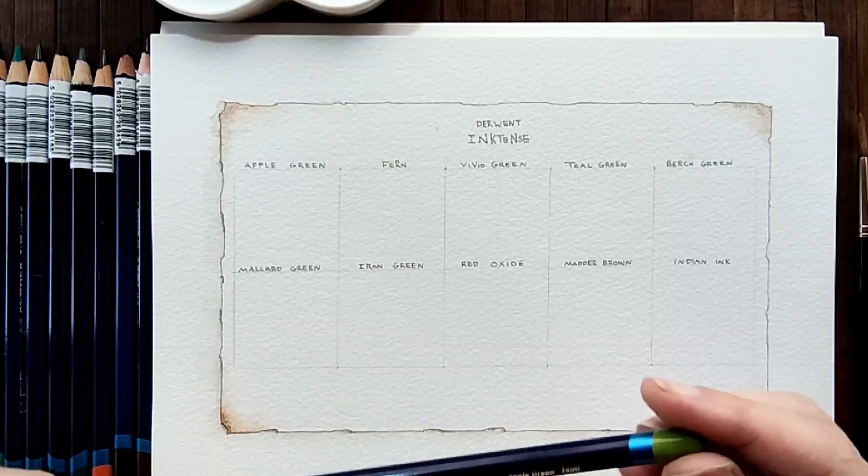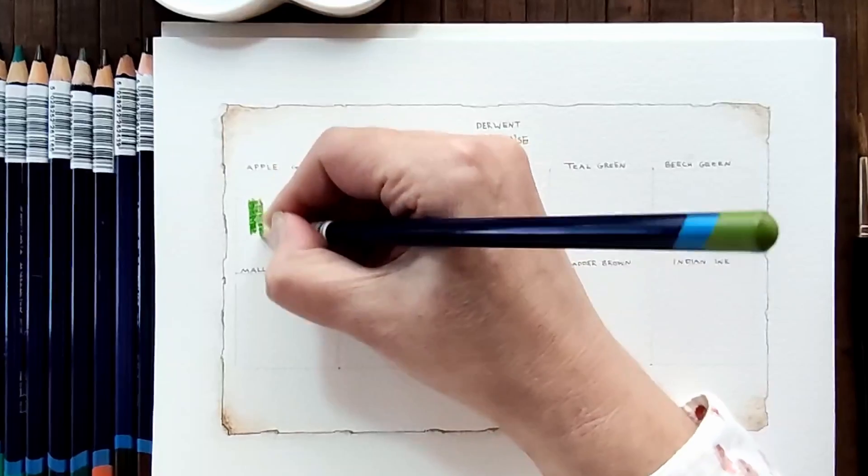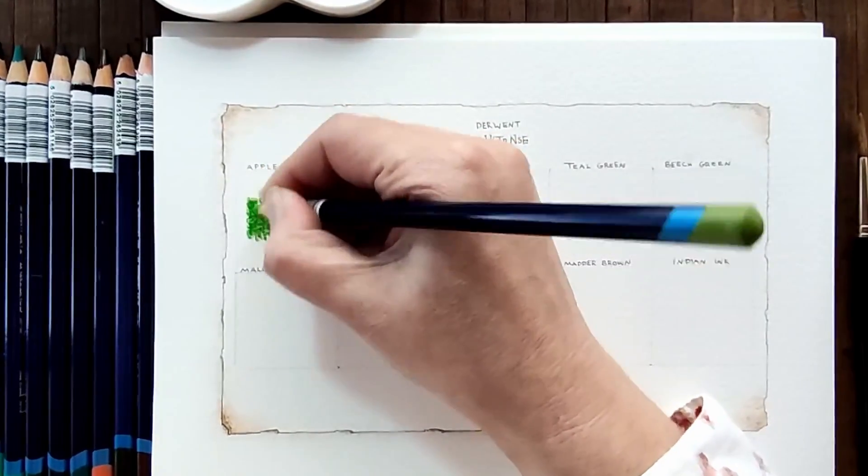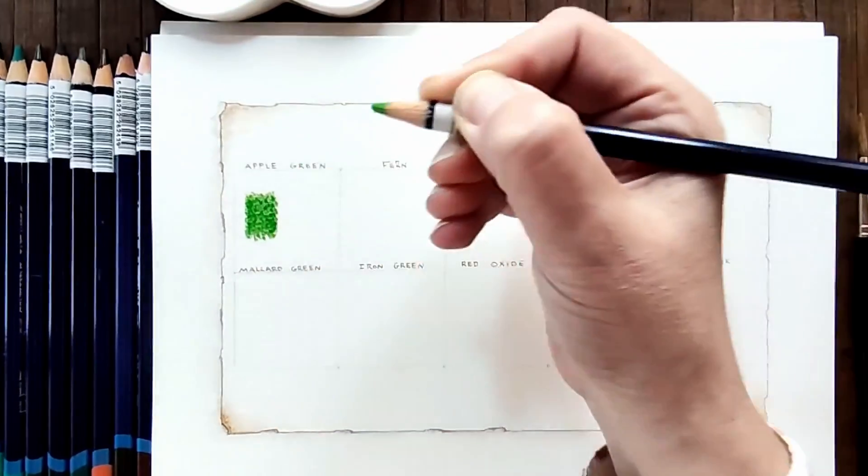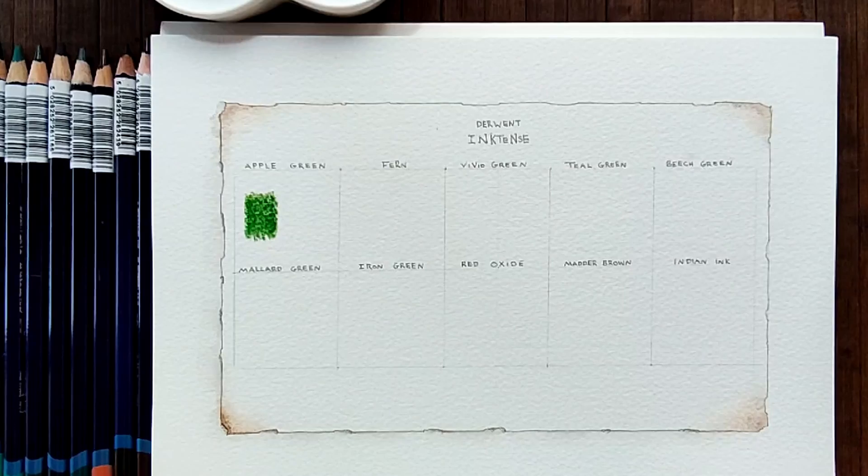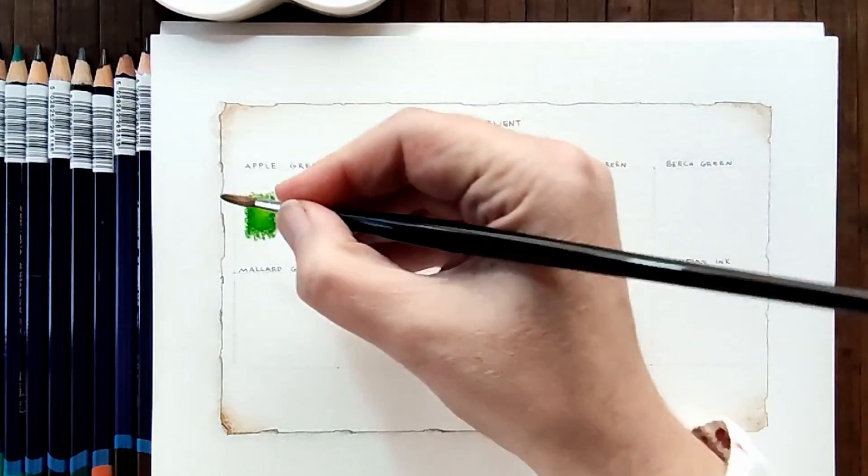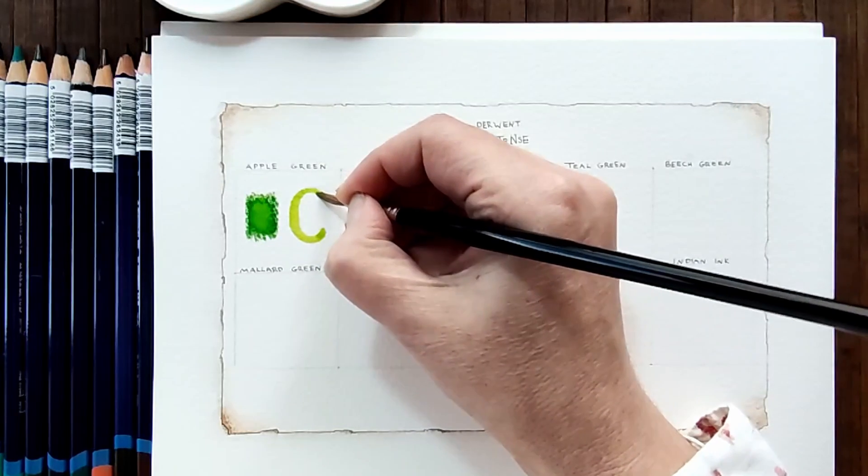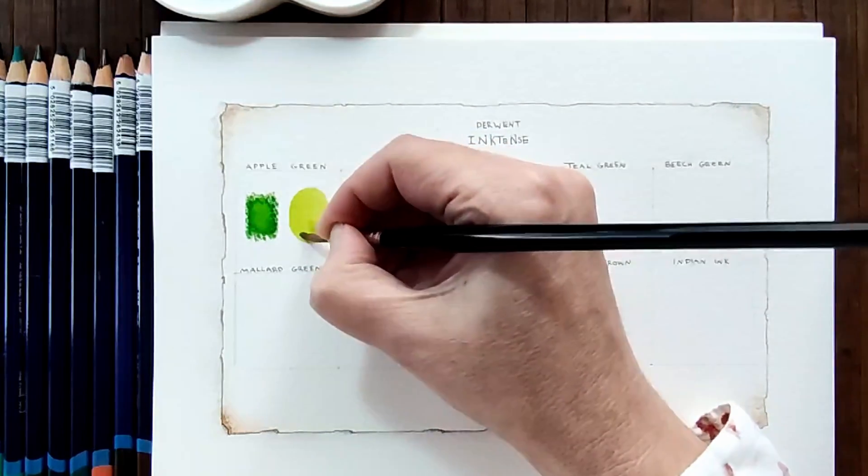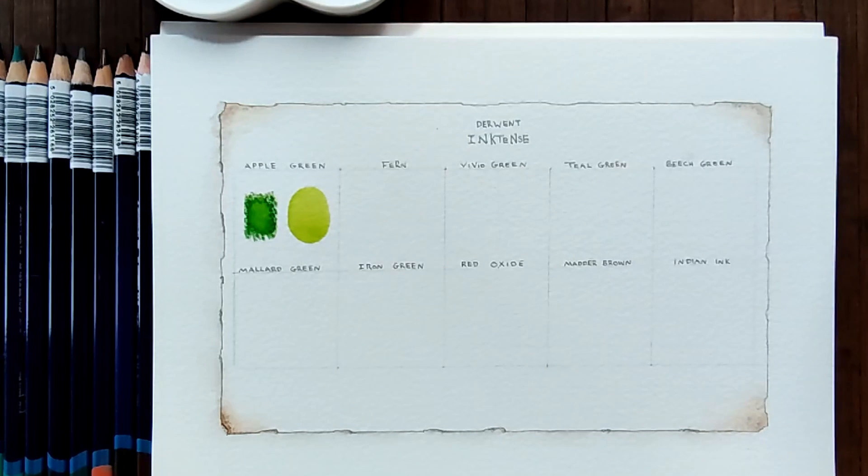So I'm going to begin with apple green and what I'm going to do is I'm just going to swatch it on one side like that and with my brush I am going to add some water, a little bit more water and just make an oval on this side. Wow, that is bright. That is almost fluorescent. Let's wait and see when it dries, if it stays that vibrant. So that was apple green.